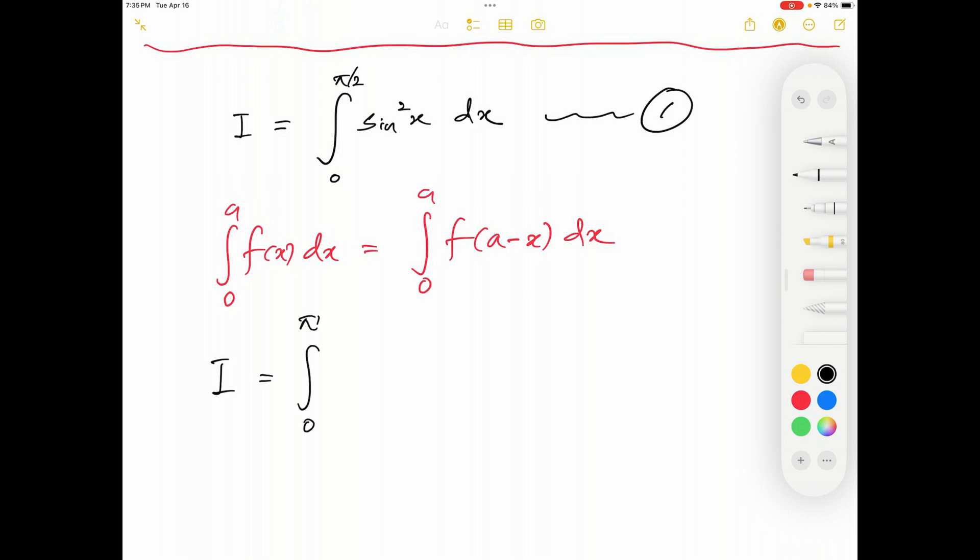The limits stay the same 0 to pi over 2 sin squared. Now the x right here will be replaced by the upper limit which is pi by 2 minus x. Sin squared pi over 2 minus x and then we have dx.